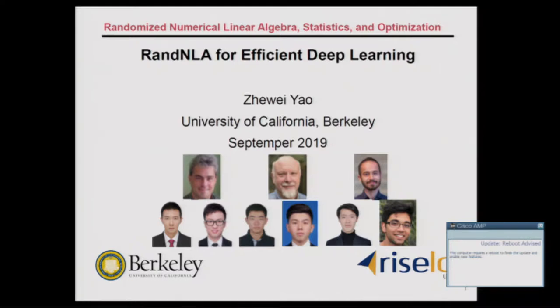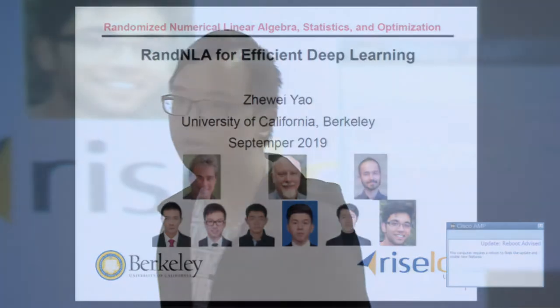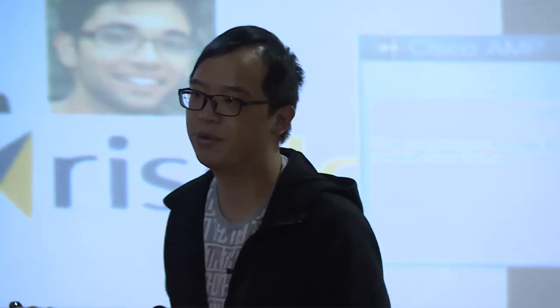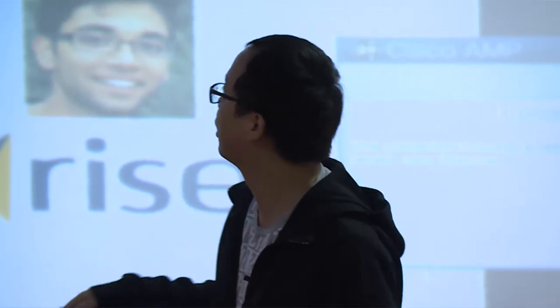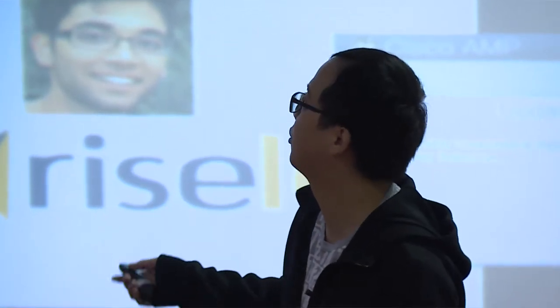I'm talking about randomized numerical linear algebra for efficient deep learning. This is joint work with my advisor Michael and a lot of other researchers at UC Berkeley. We will talk about several papers, but many ideas are typically about efficient deep learning.